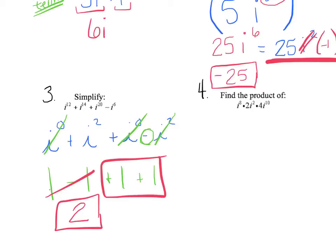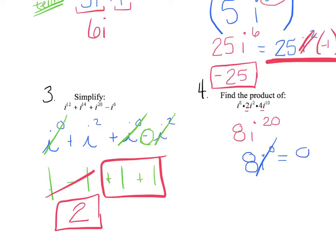Now find the product of i to the 8th times 2i squared times 4i to the 10th. When multiplying, you don't need like terms — you simply multiply and add the exponents. 4 times 2 is 8, and adding exponents 8 plus 2 plus 10 gives 8i to the 20th. Note: you can only add exponents when multiplying — that's why we had to break them down in the addition examples. Now divide 20 by 4: remainder is 0, so we get 8i to the 0, and i to the 0 is 1, giving a final answer of 8.